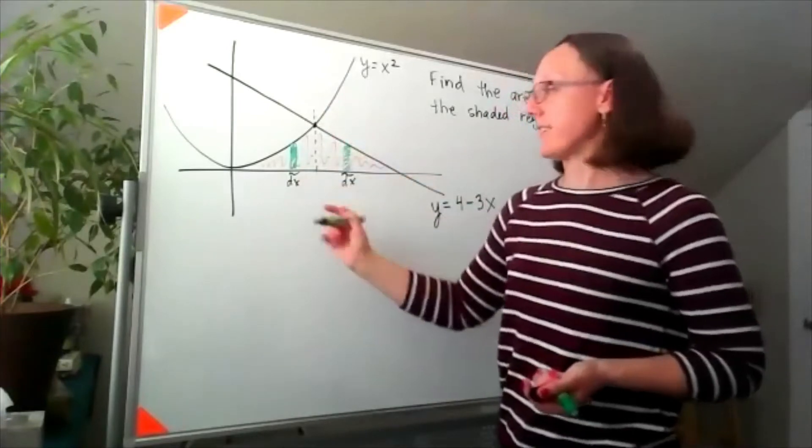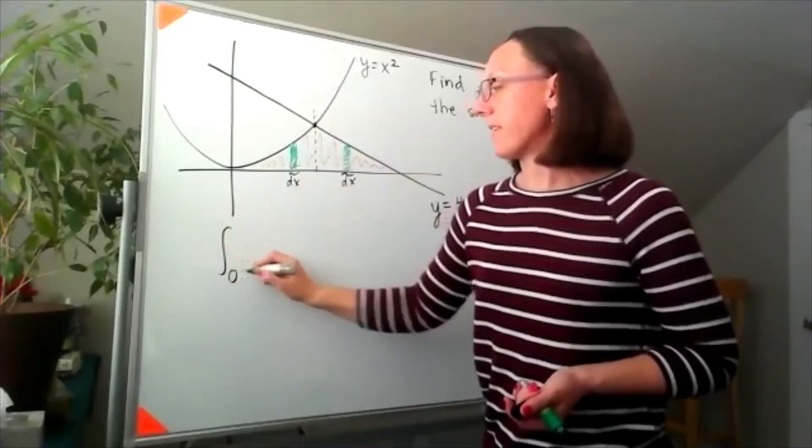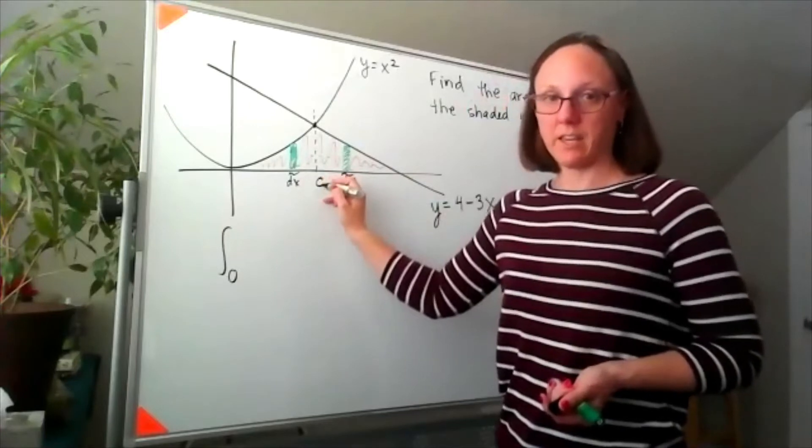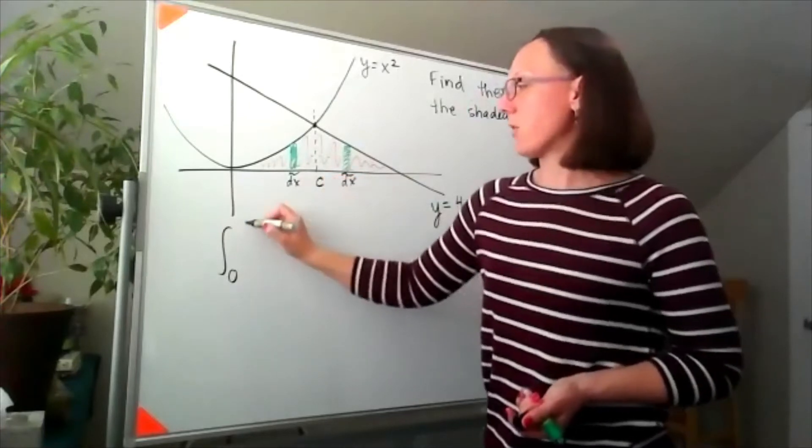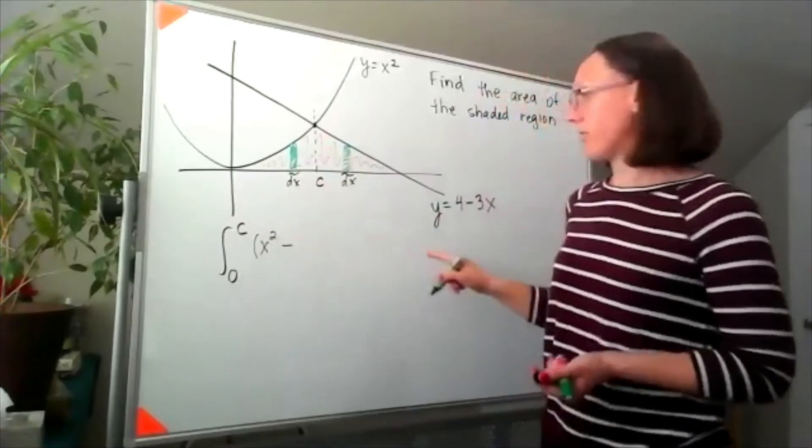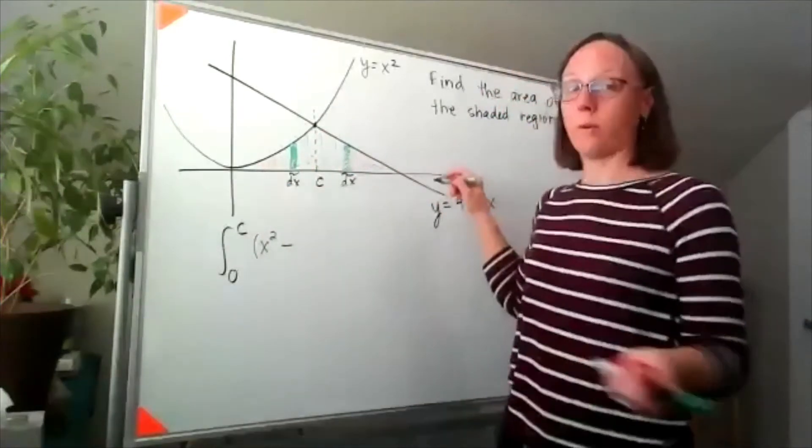So on the left hand side, I'd be looking at the integral from zero to, well I don't know what this point is yet, so I'm just going to call it c. I'd be going from zero to c with my top function as x squared and my bottom function as the line y equals zero.